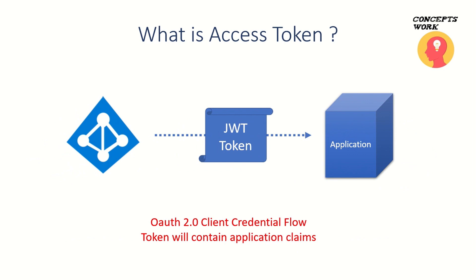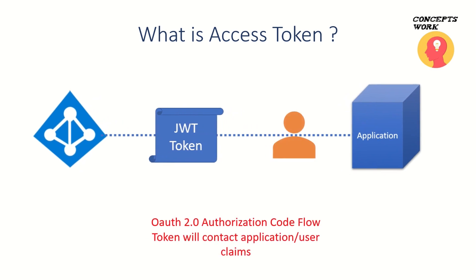Let me explain this with an example. If your application is using the OAuth 2.0 client credential flow, the access token which Azure AD issues will only have claims related to the application. But if your application is using the OAuth 2.0 authorization code flow — wherein there is user interaction — the access token will have both types of claims: some related to users as well as application claims. To showcase how this works, I will be using Postman.